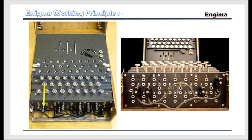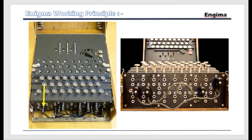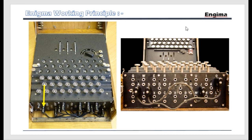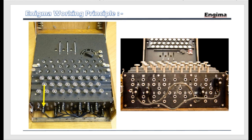So how does Enigma actually work? You can see the top view of the machine. At the top you can see the rotors, the light board, the keys, and at the bottom the plug board. Now let's talk about the working principle of Enigma. There is very tricky wiring going on in this machine.